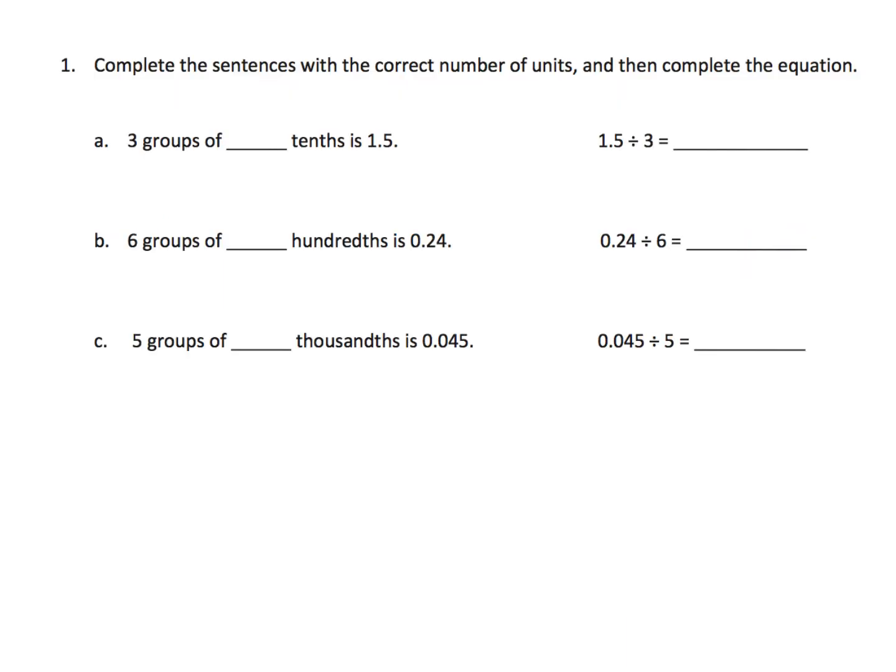I'm going to quickly whip through some of these. It says three groups of how many tenths is equal to 1.5. The idea would be, well this is 15 tenths, so that means three groups of 5 tenths gives us 15 tenths. So working it backwards, 1.5 divided by 3 is 5 tenths.